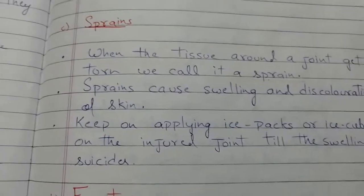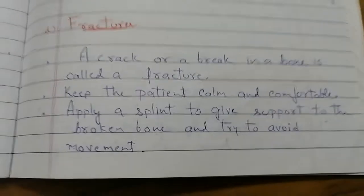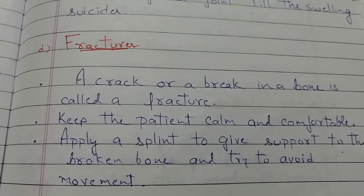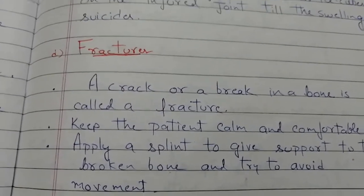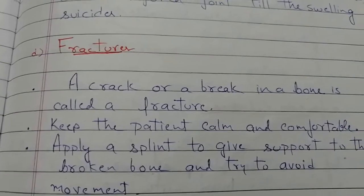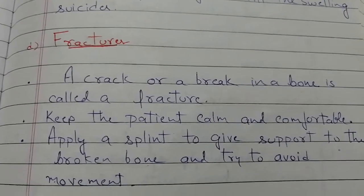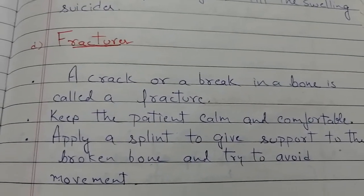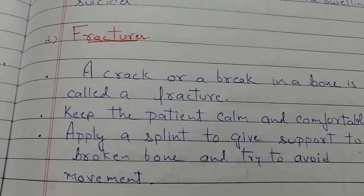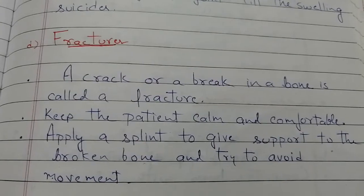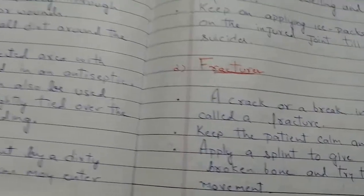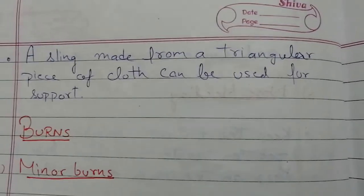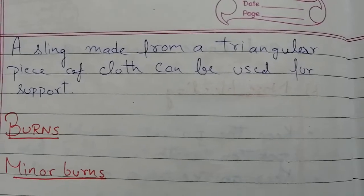Fracture: a crack or a break in the bone is called a fracture. Keep the patient calm and comfortable — that is the first thing you should do. Apply a splint, which is something applied to give support to the broken bone and avoid movement. A sling made from a triangular piece of cloth can also be used to give support to the patient.